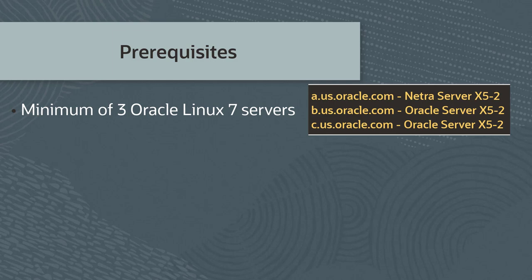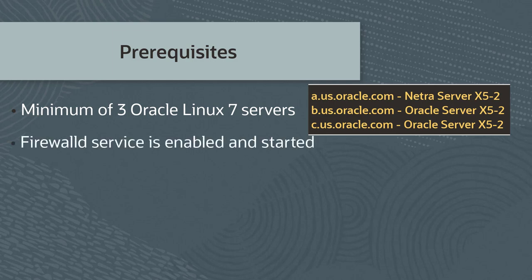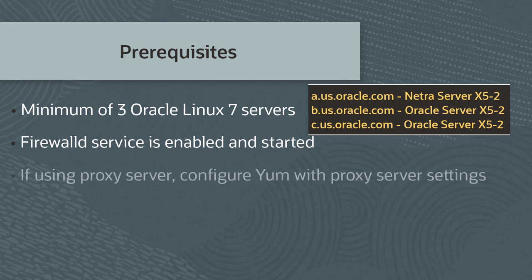Host A is an Oracle server x5-2, and host B and C are Oracle server x5-2. Host A will be our deployment host — that is, I'll initiate the deployment from host A. Ensure that the Firewalld service is enabled and started on all three Oracle Linux 7 servers. If you are using a proxy server for internet access, configure YUM with the proxy server settings.